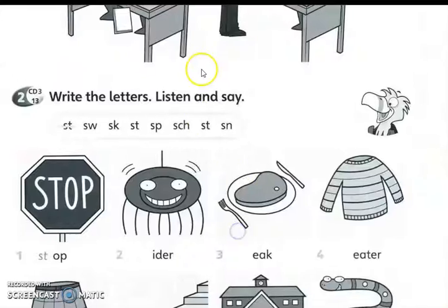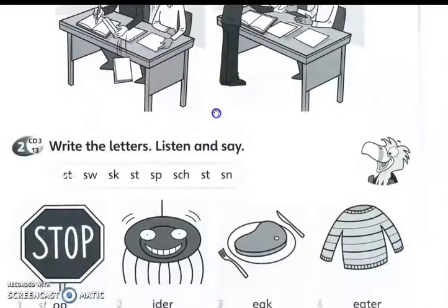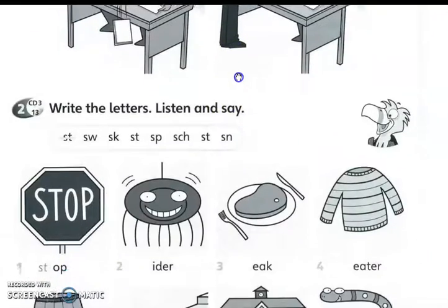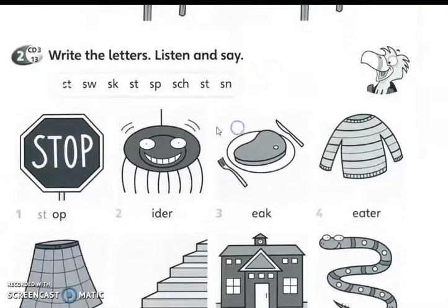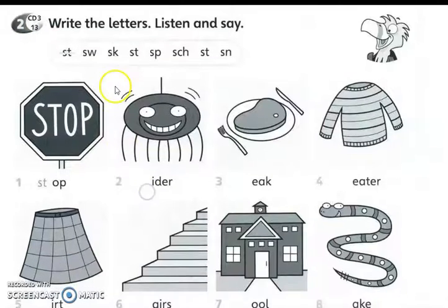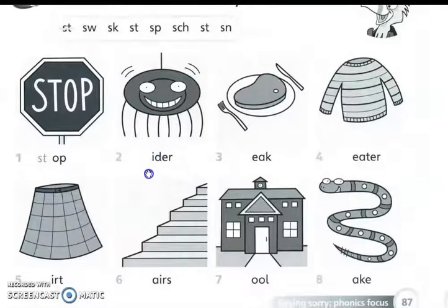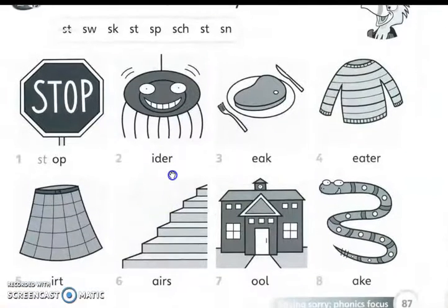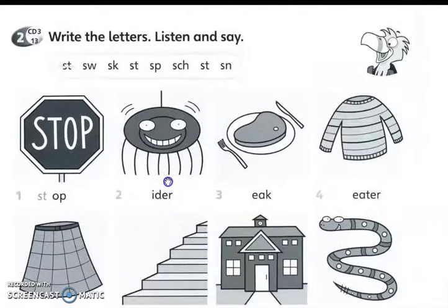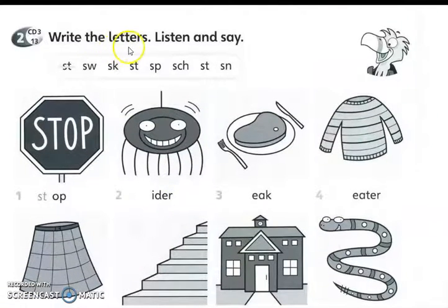Page 87. So for today we want to go to activity number 2. Activity number 2. So before we go to the audio CD 3 track 13, we see the pictures here. Activity number 2: Write the letters. Listen and say.